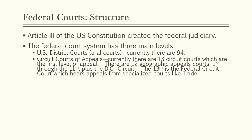Currently there are 13 circuit courts which are the first level of appeal. There are 12 geographic appeals courts — the 1st Circuit through the 11th Circuit, plus the District of Columbia Circuit. The 13th Circuit Court is the federal circuit court which hears appeals from specialized courts like trade. Geographic courts, the 1st through the 11th, contain various numbers of states divided to make it roughly even given volume and population. For example, Kansas is in the 10th Circuit, but neighboring Missouri is in the 8th Circuit.